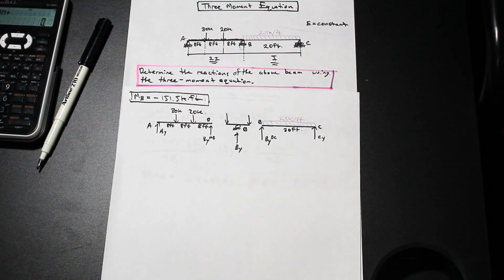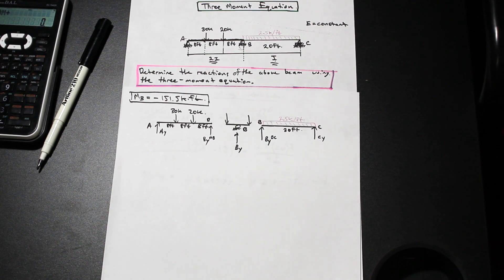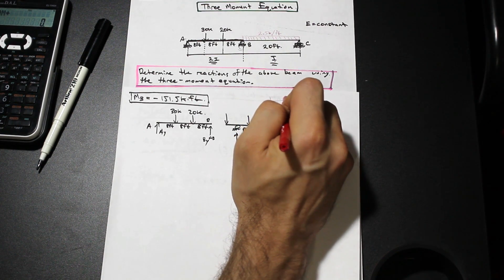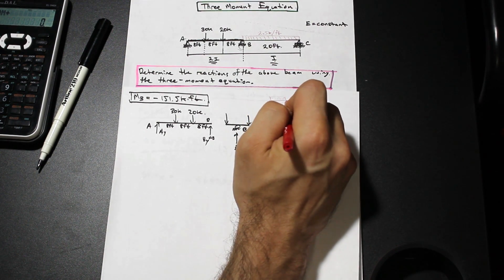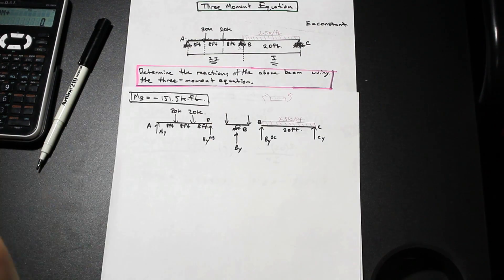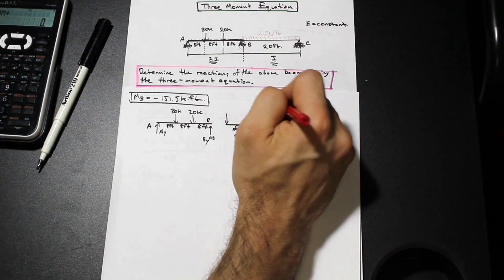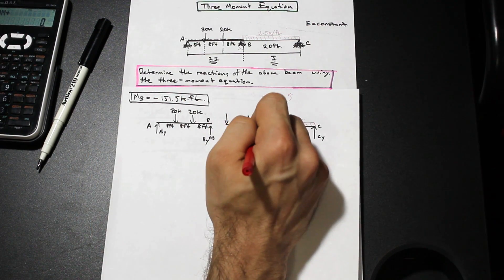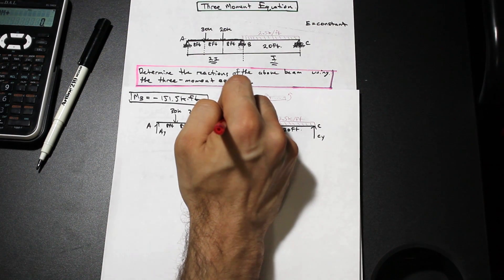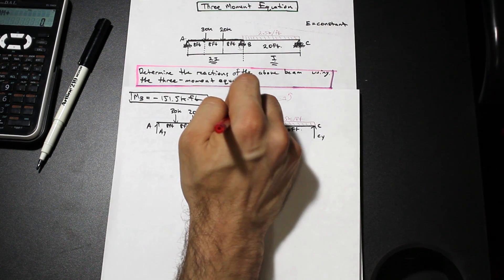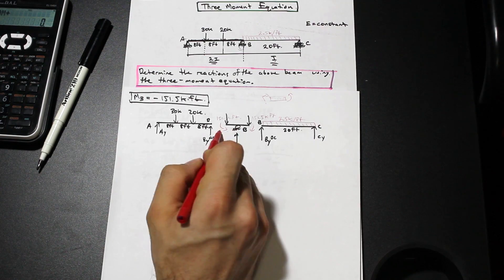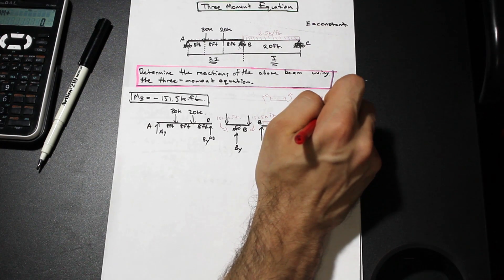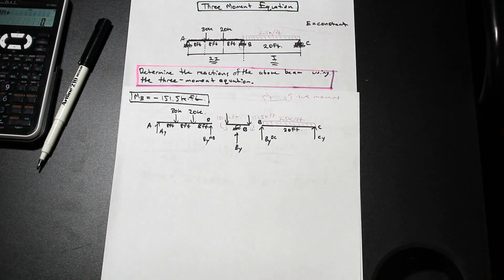Simply you just need to remember your sign convention. When there is bending like this on a beam, if the top portion of the beam is in compression, that's considered a positive moment. So since we got a negative moment here, that means that at this portion at B we're going to have two moments of 151.5 kip feet and as you can see it's in the opposite direction of our sign convention for positive moment.